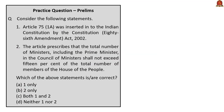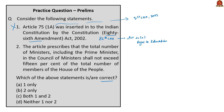The next question has two statements. Statement 1 is wrong because the 86th Constitutional Amendment Act of 2002 deals with Article 21A, which is the fundamental right to education — it has no connection with the Council of Ministers. Article 75(1A) was inserted by the 91st Constitutional Amendment Act of 2003. Statement 2 is correct: the total number of ministers, including the Prime Minister, in the Council of Ministers shall not exceed 15% of the total number of members of the Lok Sabha. So the correct answer is option B, statement 2 only.